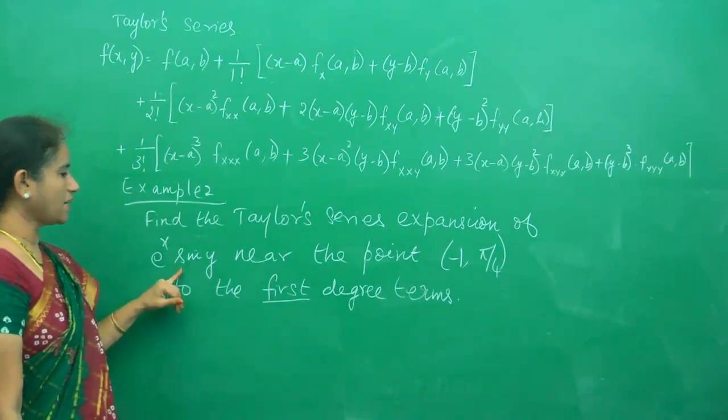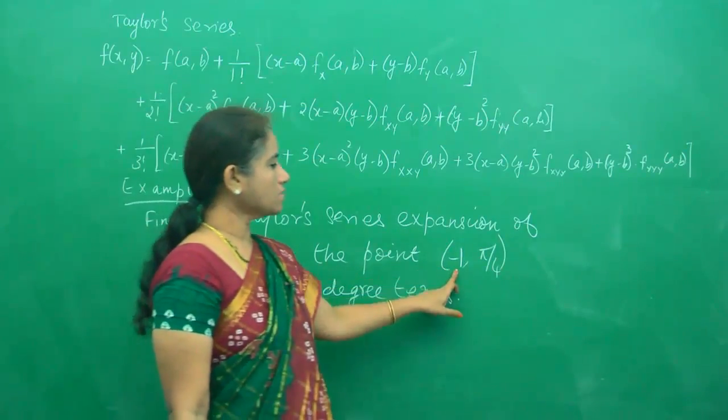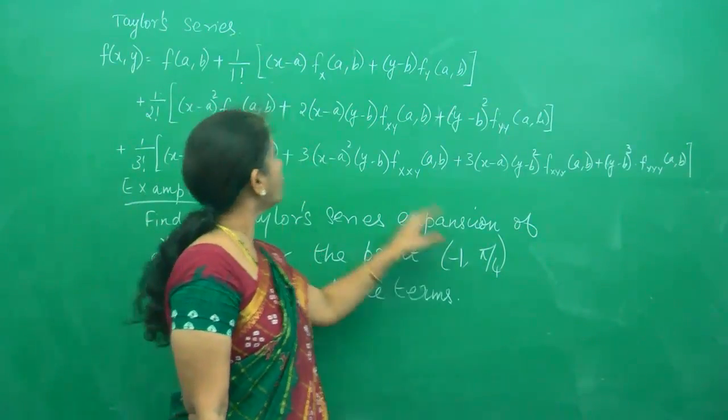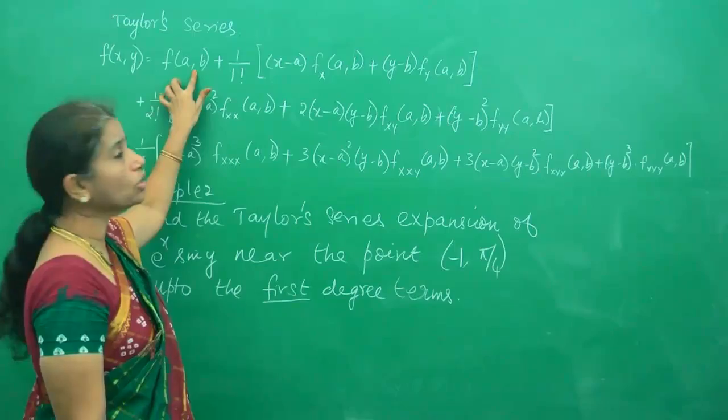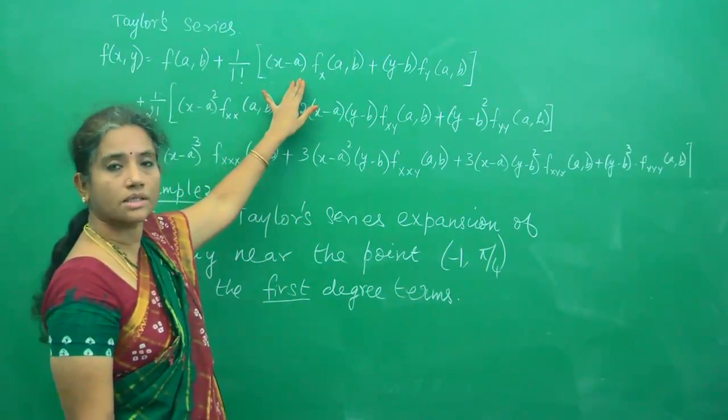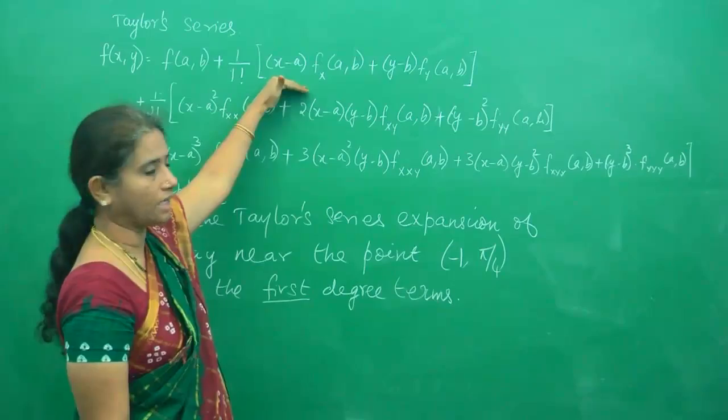So we are going to expand e^x sin y where a is -1 and b is π/4. a and b are given to you, and you are just asked for the linear terms. So stop up to the first line.